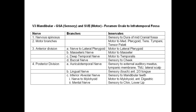The anterior division has: nerve to the lateral pterygoid; masseteric nerve to the masseter; deep temporal nerve to the temporalis; and buccal nerve, which is sensory to the cheek.